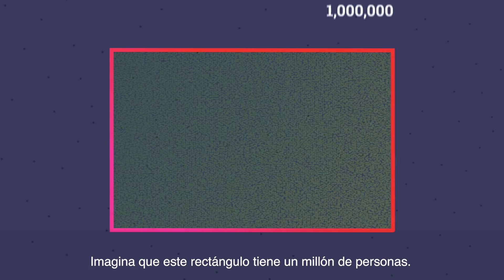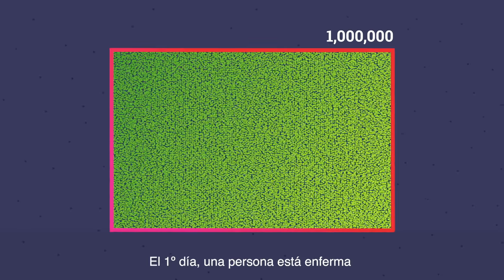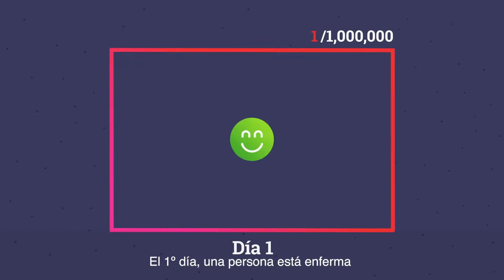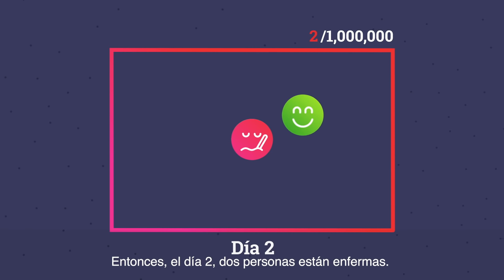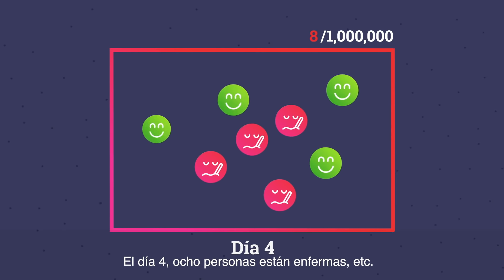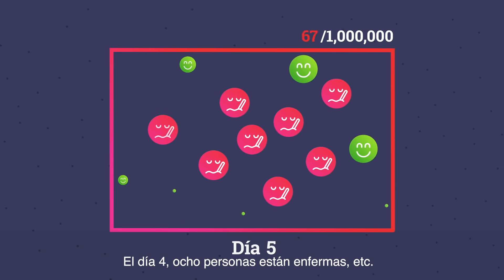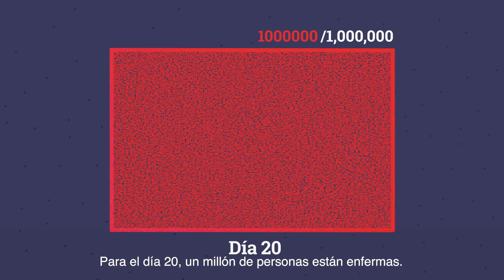Imagine this rectangle has one million people in it. On day one, one person is sick, and every sick person can spread it to one other person every single day. So on day two, two people are sick. On day three, four people are sick. On day four, eight people are sick, and so on. By day 20, one million people are sick.